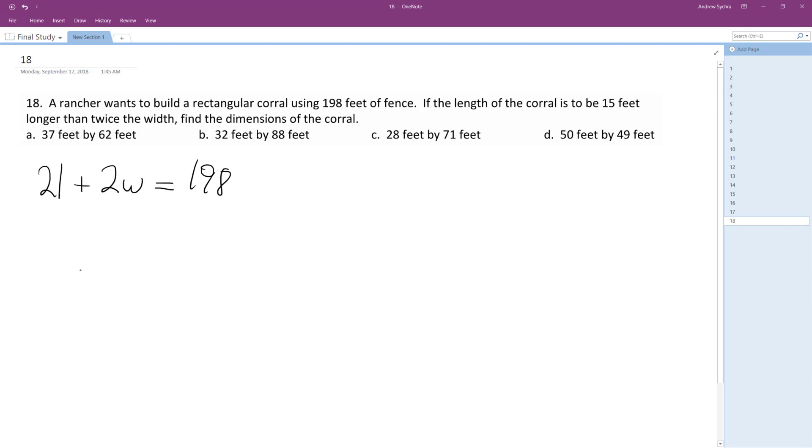So if the length of the corral, length is equal to 15 feet longer than twice the width. We want to figure this out. All right, so we can just substitute this in.